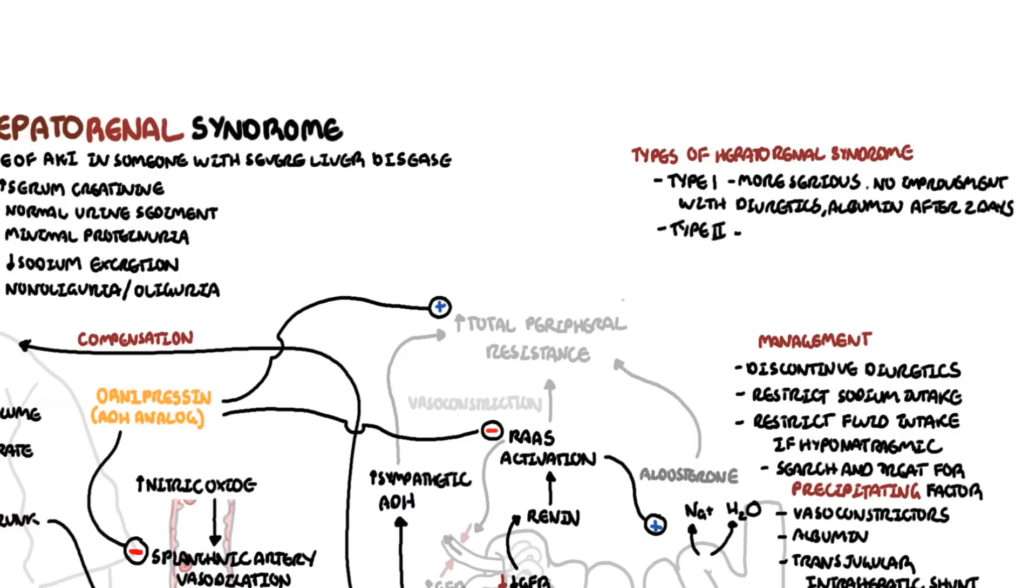Type 2 hepatorenal syndrome is less severe. The major clinical feature in patients with type 2 hepatorenal syndrome is ascites that is resistant to diuretics.